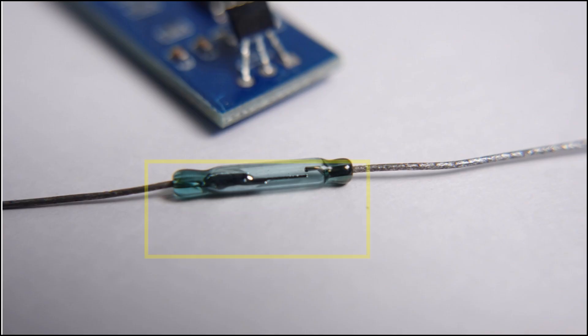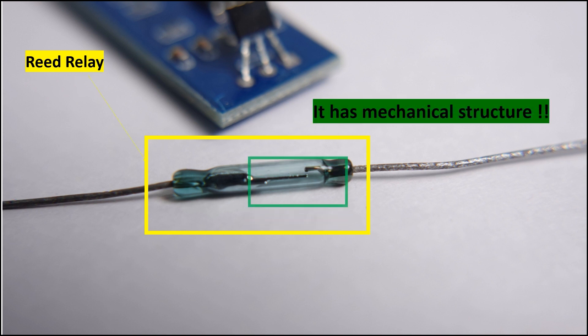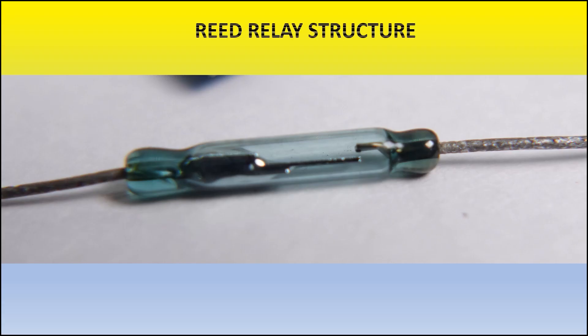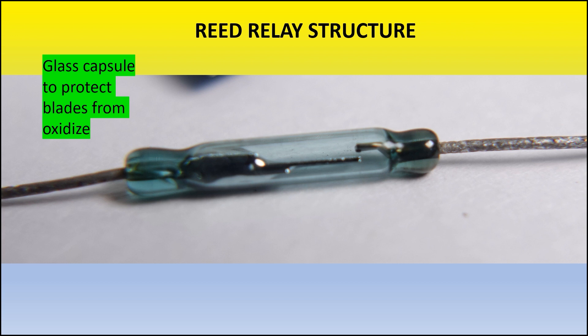This is the reed relay. So the reed relay is the mechanical one. As you see, there are two blades here. When the external magnet is facing, these two blades will get connected to each other. This structure of it, we have the glass capsule around it. It's for protection from the oxidizing and it's filled up with the inert gas, the nitrogen one for protection.